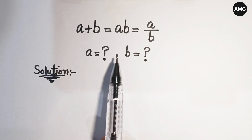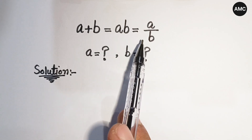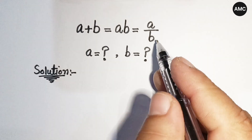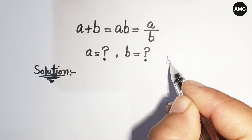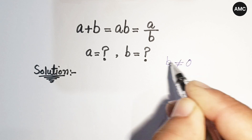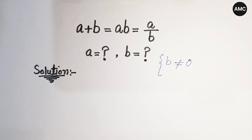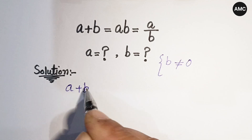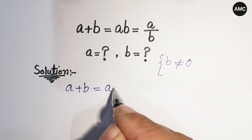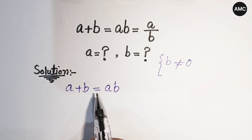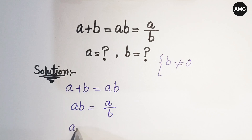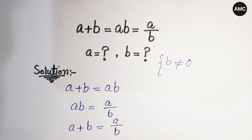We have three equations from this expression. Note that b is in the denominator, so b is not equal to zero. Our three equations are: first, a plus b equals a times b; second, a times b equals a over b; and third, a plus b equals a over b.